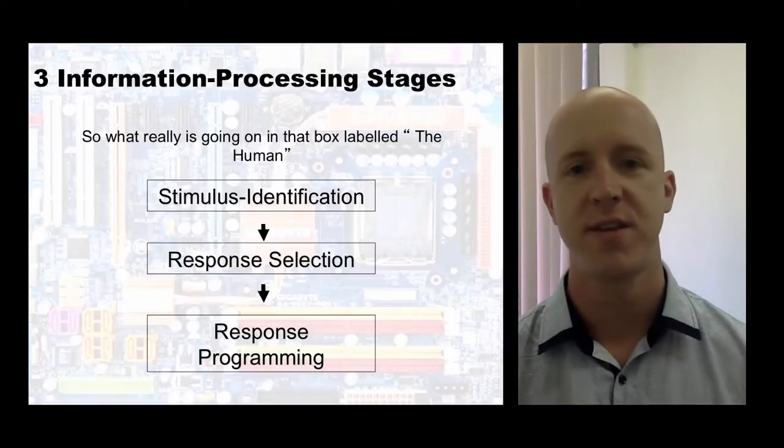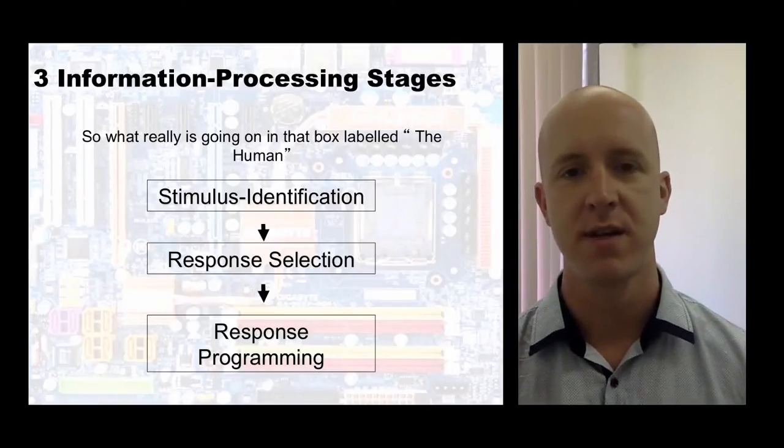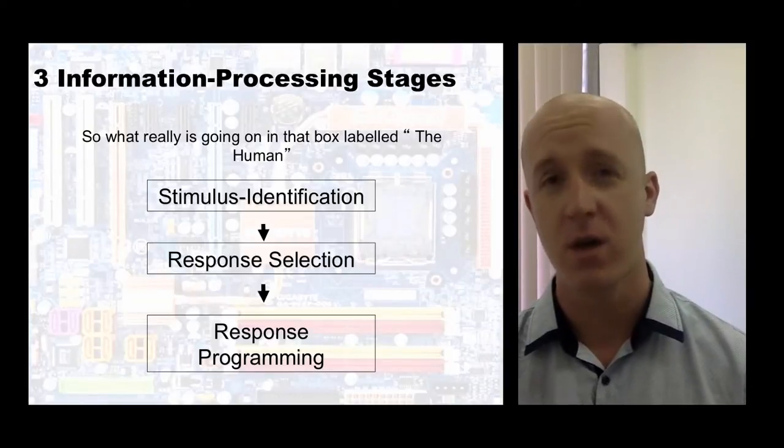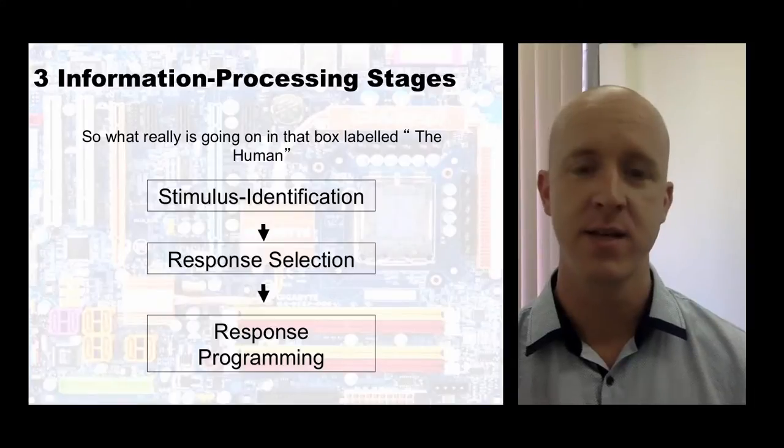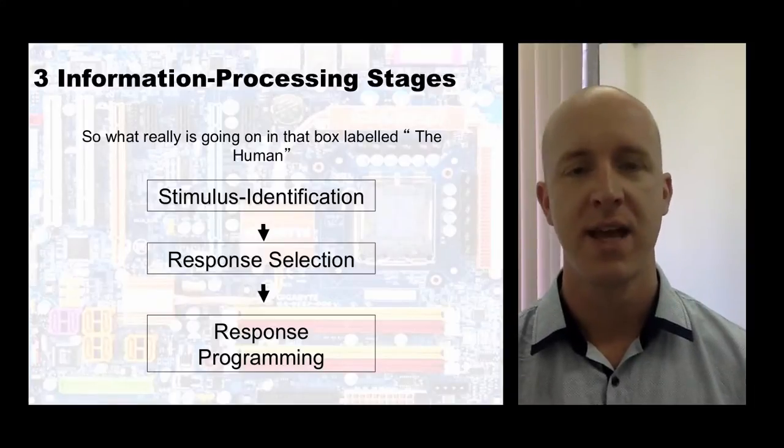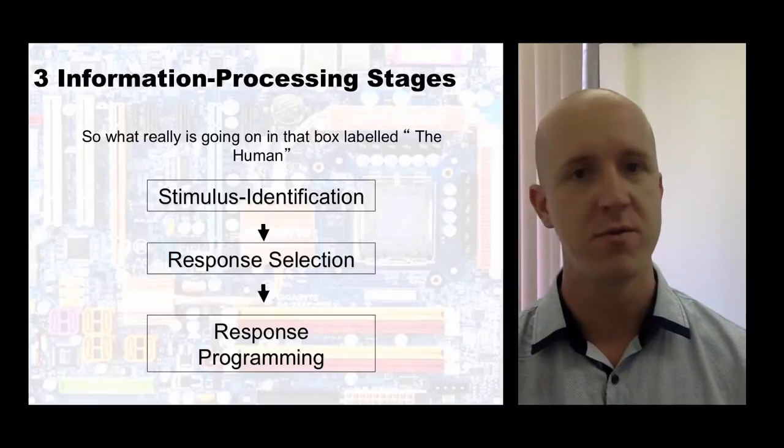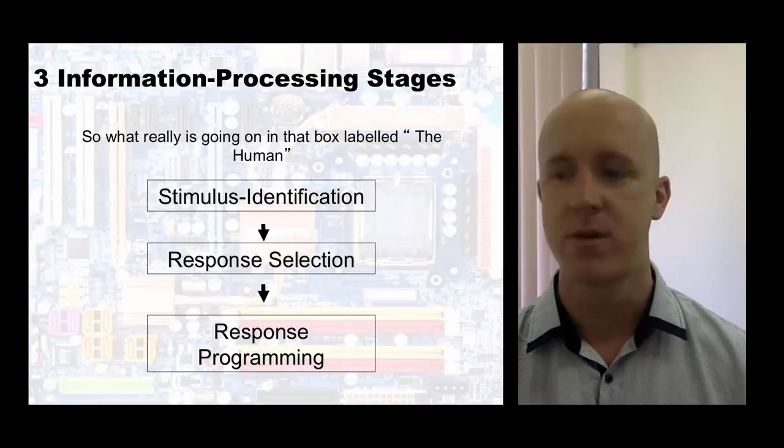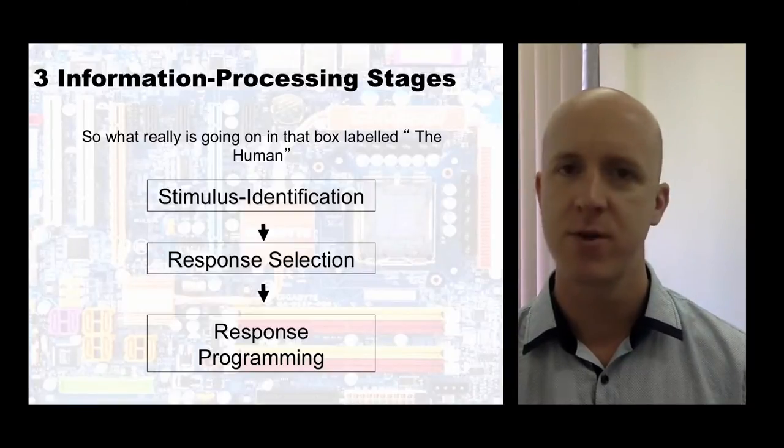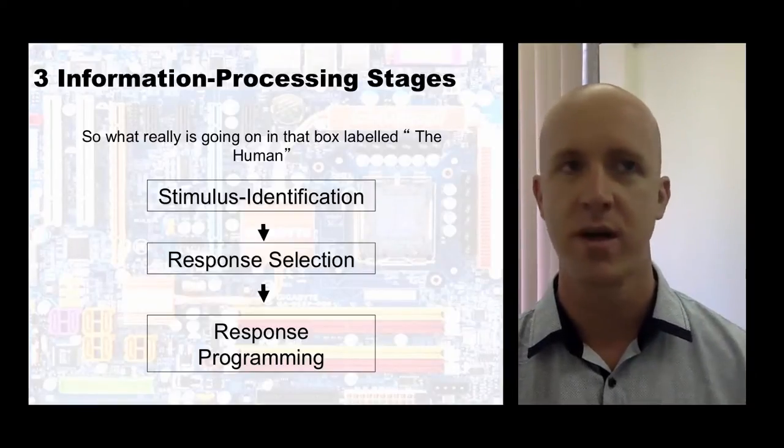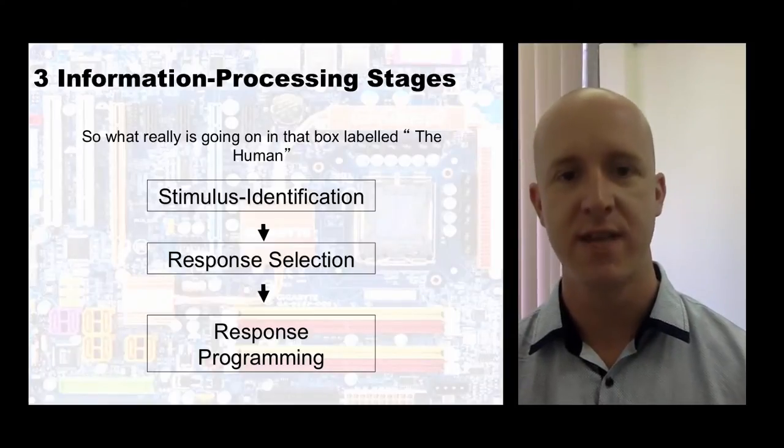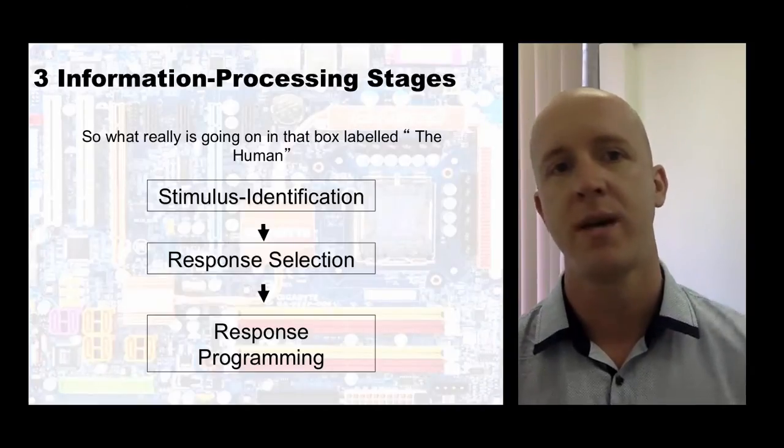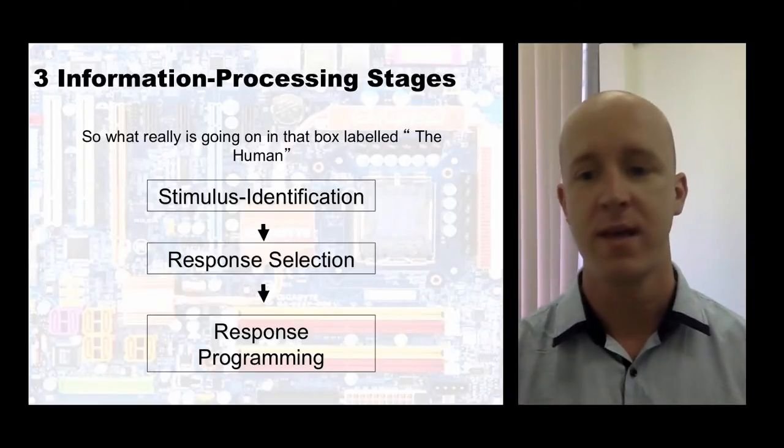The first iteration is there's some sort of stimulus identification where information is fed into the system and you're somehow coding what's being perceived. Then we choose the most appropriate response. We have to program that response and produce it somehow. If any of those are done incorrectly, the program itself will be wrong and the eventual output will be non-optimal.